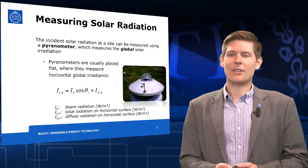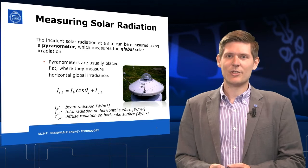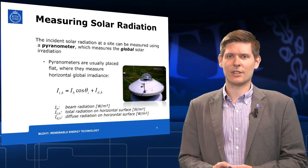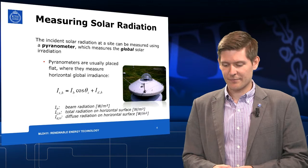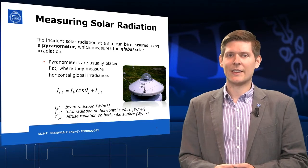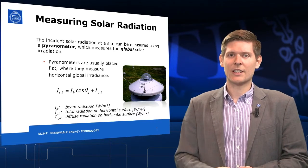In concentrating solar power systems, the beam radiation IB is very important as these systems can only utilize beam radiation. In order to calculate the beam radiation, we also need to know the diffuse radiation.